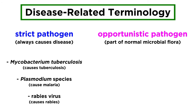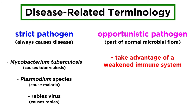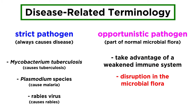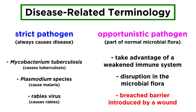But most human infections are caused by opportunistic pathogens, which are typically part of the normal microbial flora. These organisms establish disease when they take advantage of an opportunity not normally available, like a weakened immune system, disrupted microbial flora, or a breached barrier introduced by a wound.